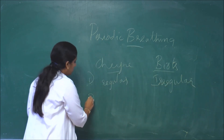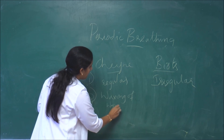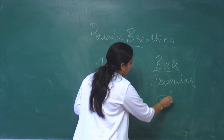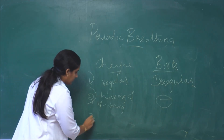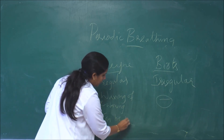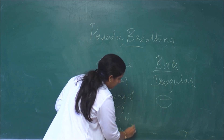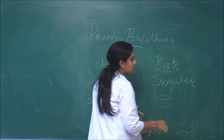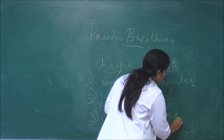Second point: waxing and waning of tidal volume occurs in Cheyne-Stokes breathing, whereas there is no waxing and waning of tidal volume seen in Biot's breathing. Third point: Cheyne-Stokes breathing can be seen in both physiological and pathological conditions, whereas Biot's breathing is never seen physiologically but is only present in pathological conditions.